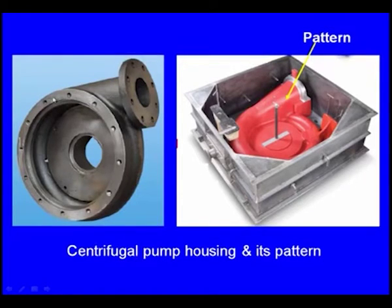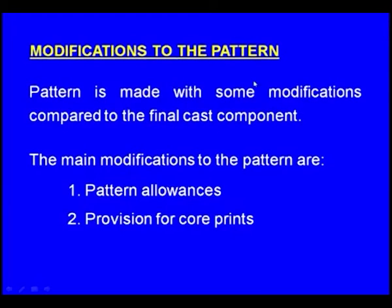Say this is the centrifugal pump to be made by casting process, and the pattern is like this. You can see this is the pattern. Now these are the modifications to the pattern. Pattern is made with some modifications compared to the final cast component. The main modifications to the pattern are pattern allowances and provisions for core prints.